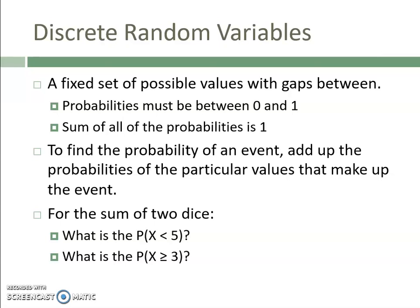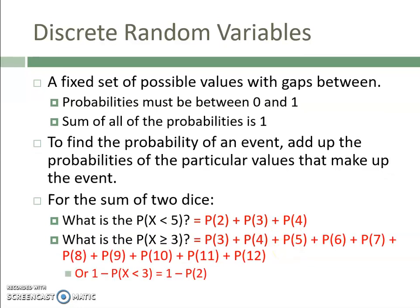For example, if X is the sum of two dice and you want the probability that the sum is less than five, you would add up the probability of getting a sum of two, three, and four. If you want the probability of at least three, you could add up all values three and above, or more quickly, find the complement and subtract from one.